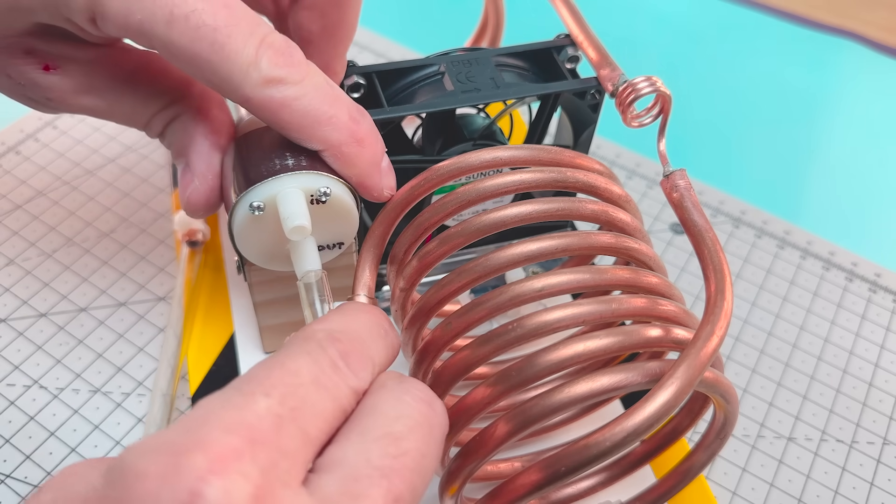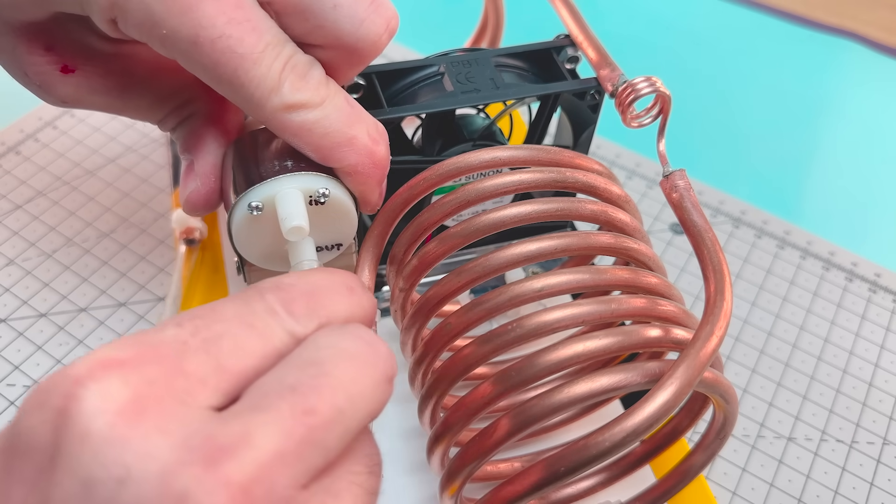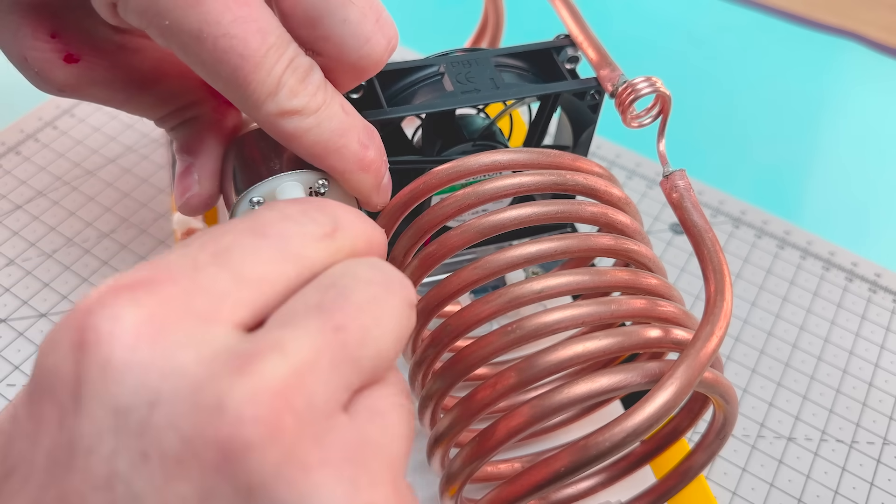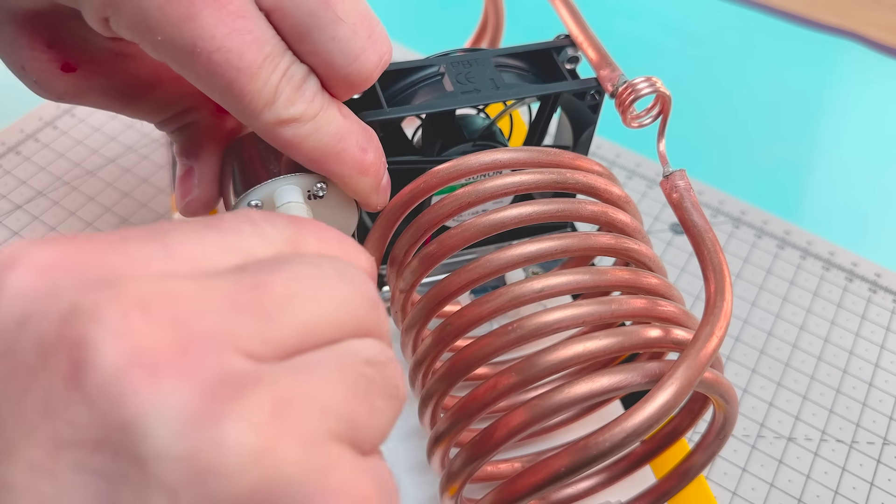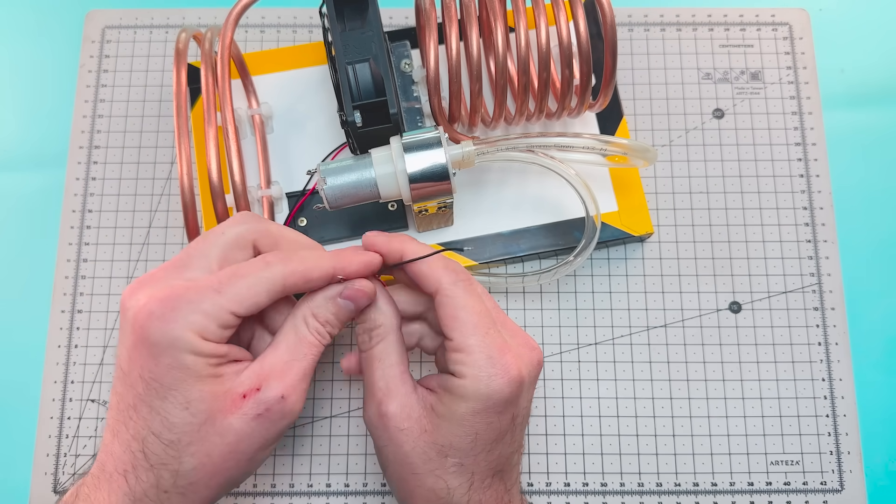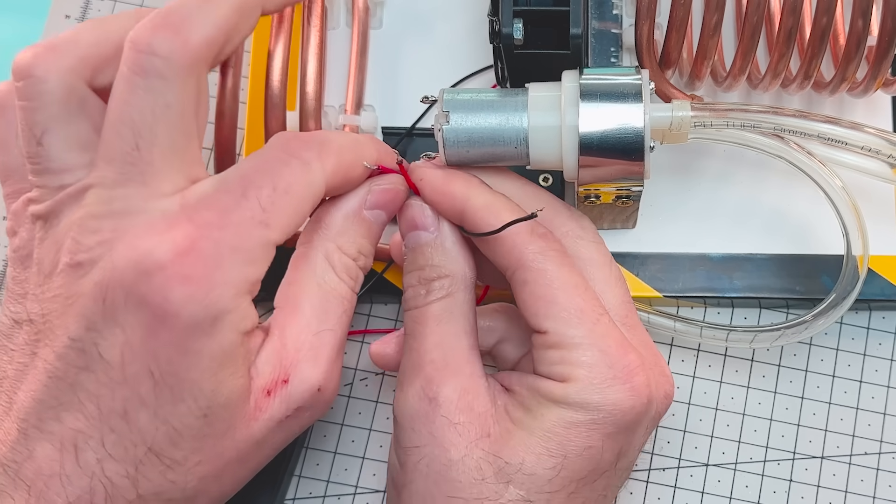Now we connect the pump outlet to the condenser and the inlet to the evaporator. And we'll connect both the air pump and the fan to the battery mounted on the wooden base.